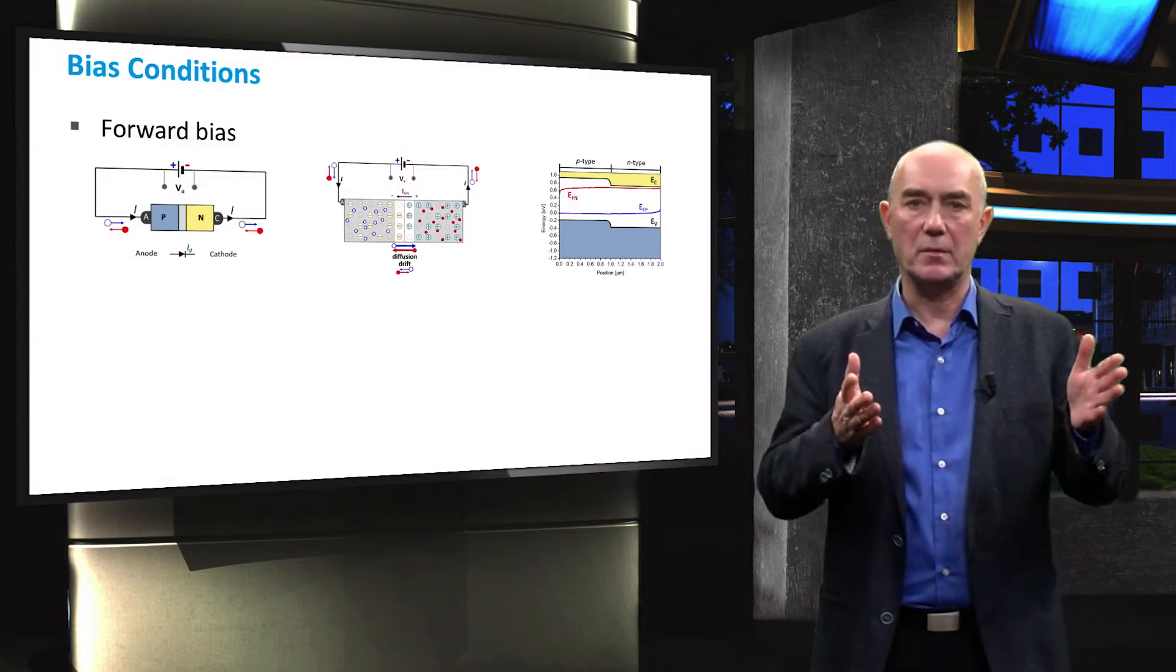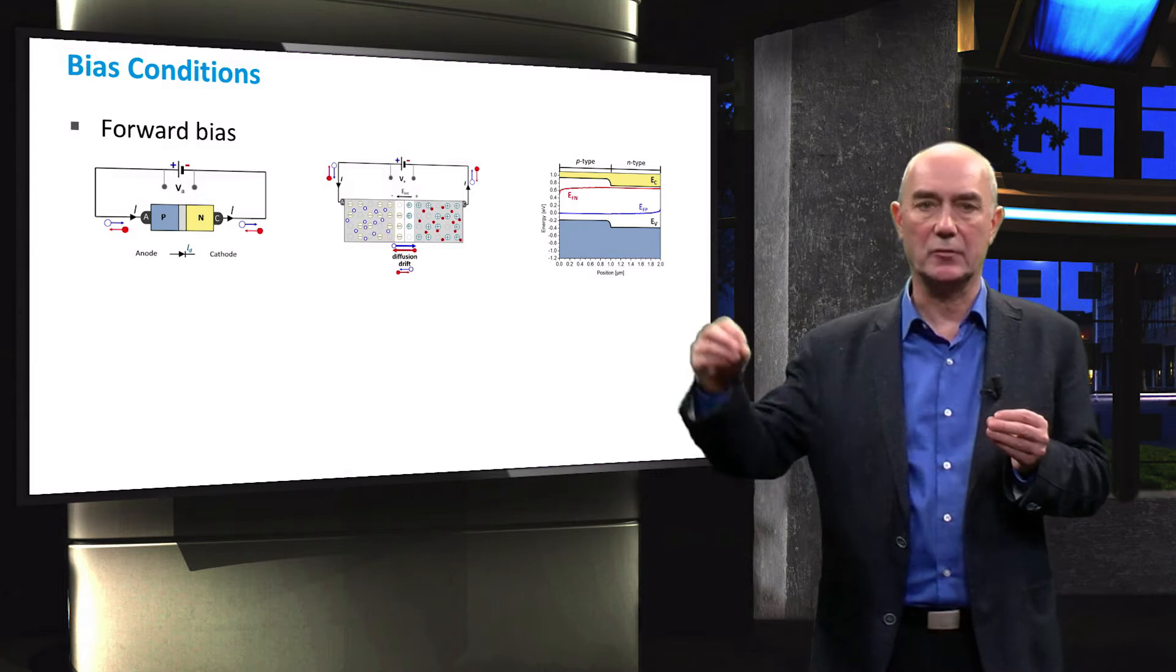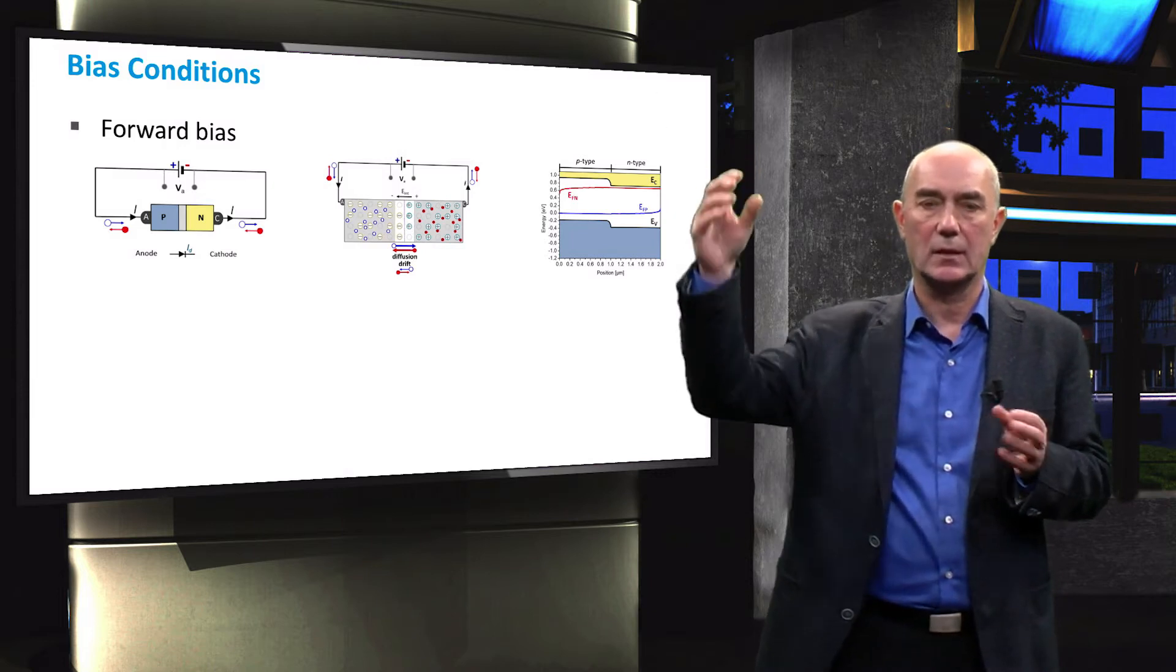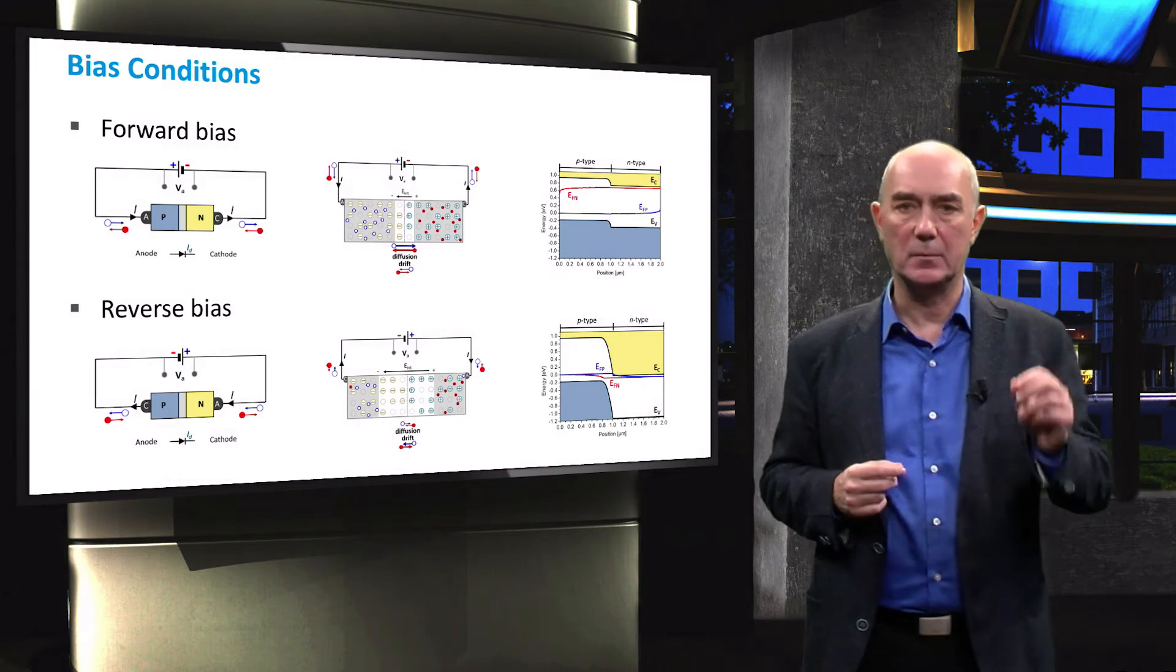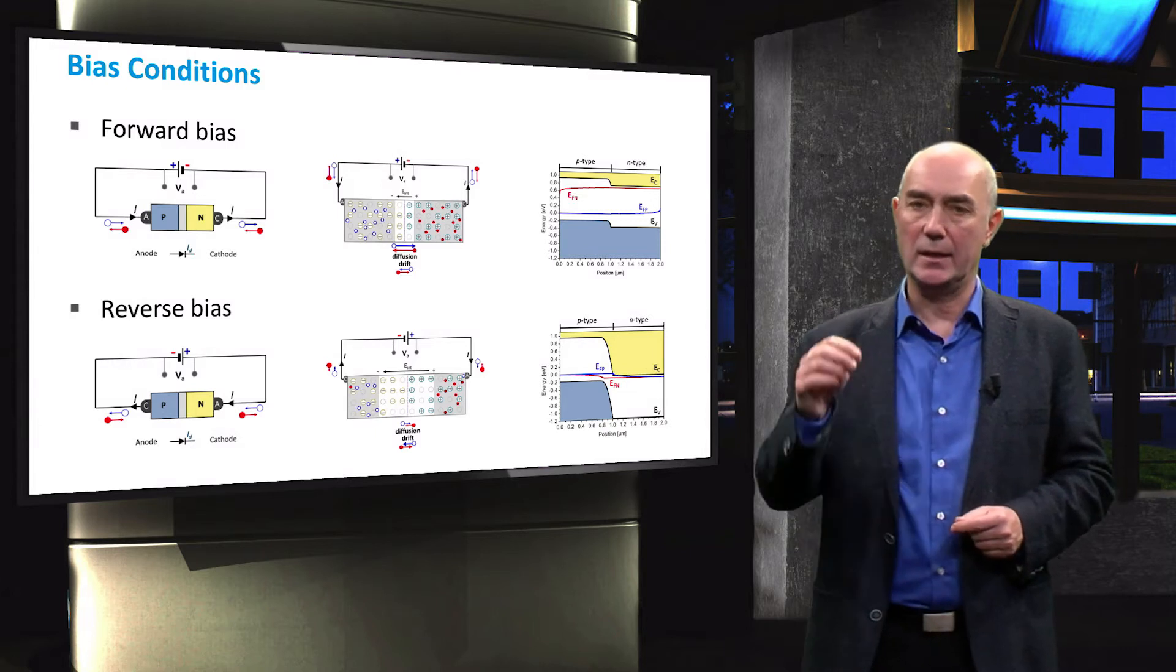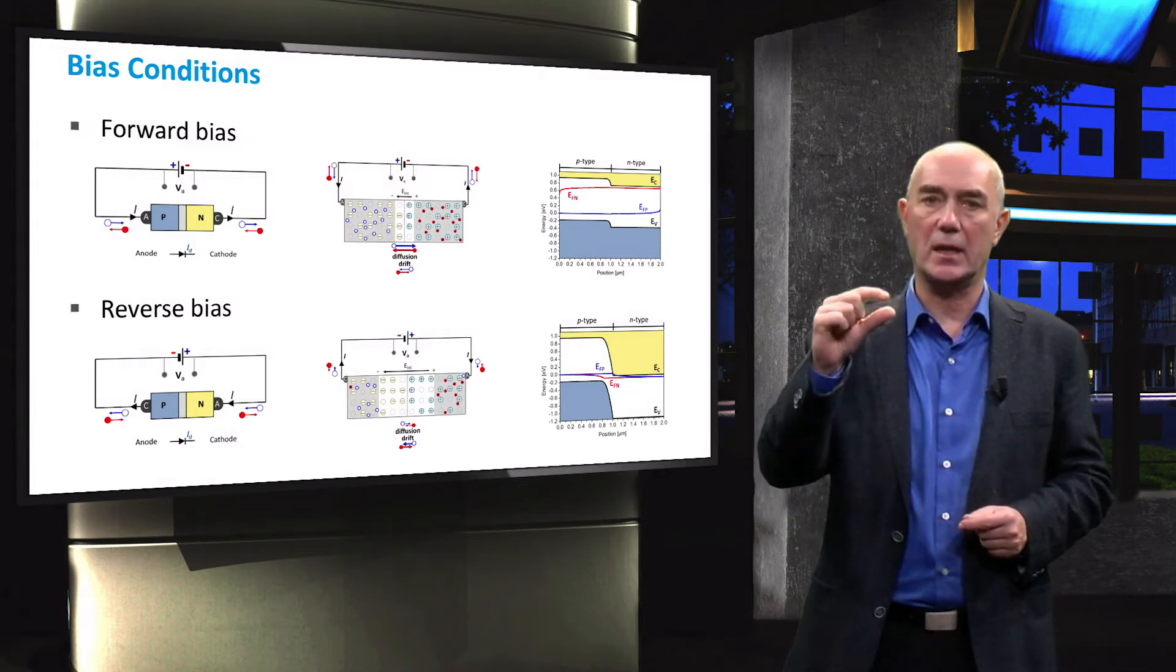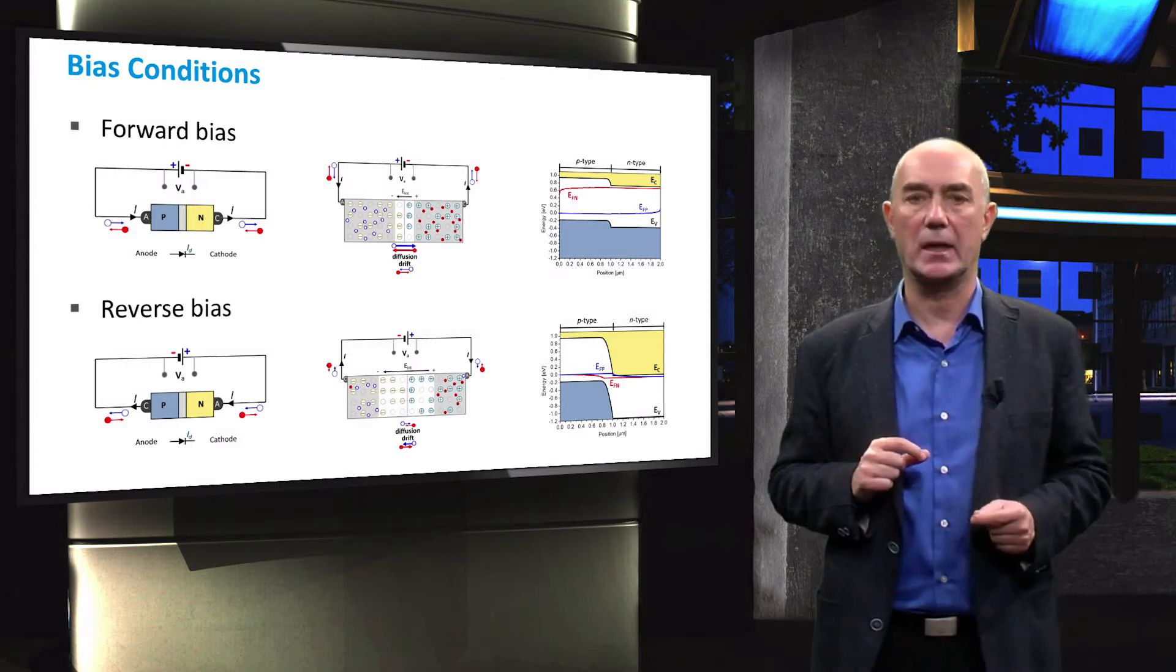As we increase Va in the forward bias direction, the current will increase exponentially. In reverse bias, on the other hand, the depletion region is expanded. Now the drift current dominates, and a very small amount of current will flow in the opposite direction as in the forward bias.